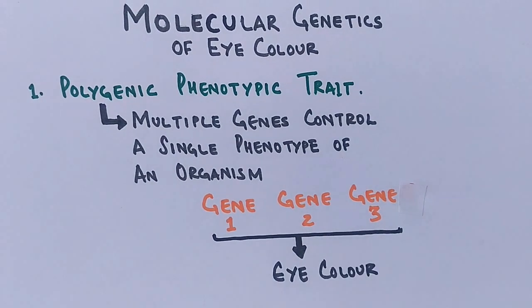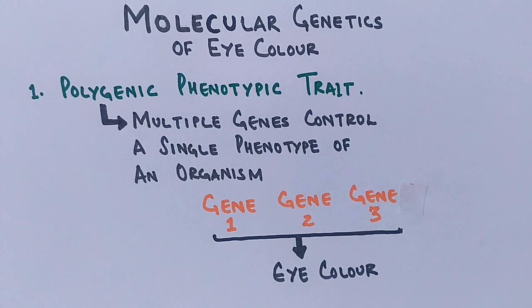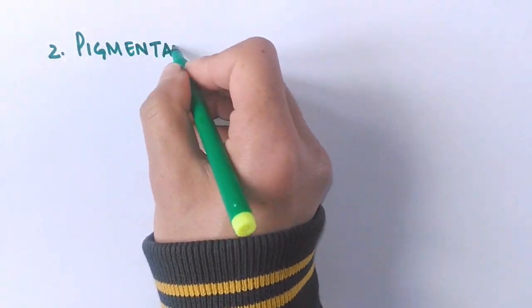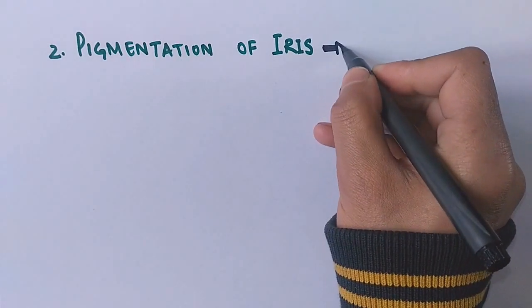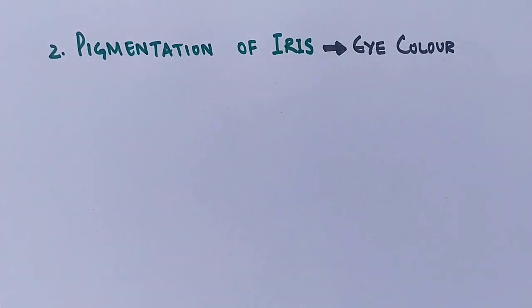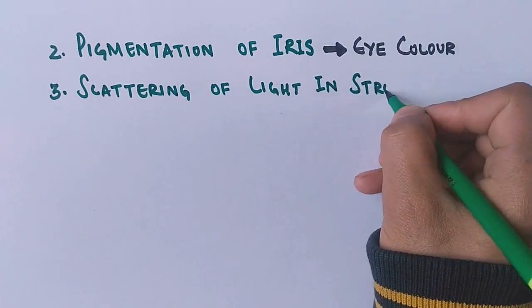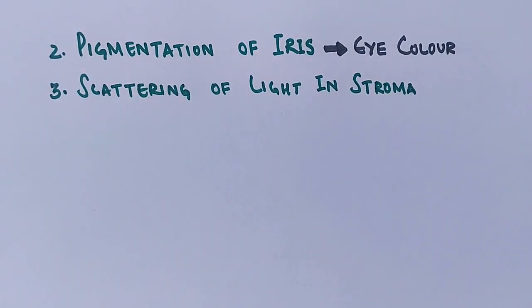It's not necessary that all genes are expressed at the same time; there can be only gene 1 contributing to eye color, or gene 2, or both genes contributing together. The pigmentation of the iris contributes to eye color — simply put, iris color is eye color. Not only pigmentation alone is responsible, but scattering of light in the stroma of the iris also contributes to eye color.